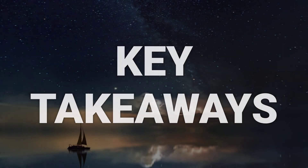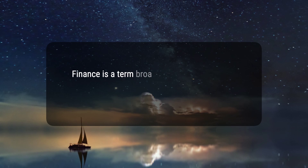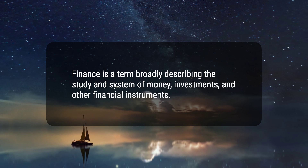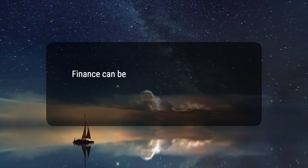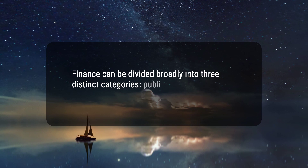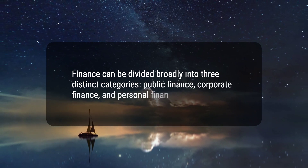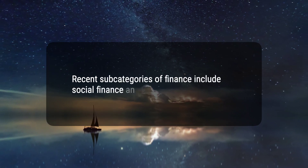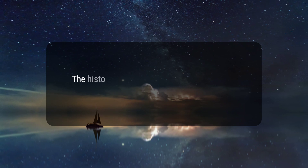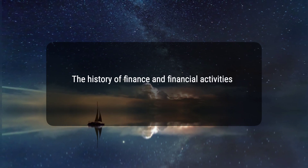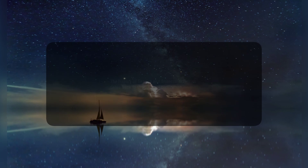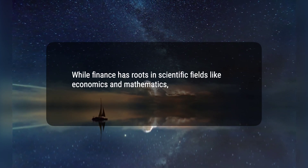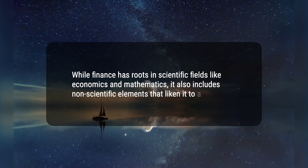Here are five key takeaways. One, finance is a term broadly describing the study and system of money, investments, and other financial instruments. Two, finance can be divided broadly into three distinct categories: public finance, corporate finance, and personal finance. Three, recent subcategories of finance include social finance and behavioral finance. Four, the history of finance and financial activities dates back to the dawn of civilization. Five, while finance has roots in scientific fields like economics and mathematics, it also includes non-scientific elements that liken it to an art.